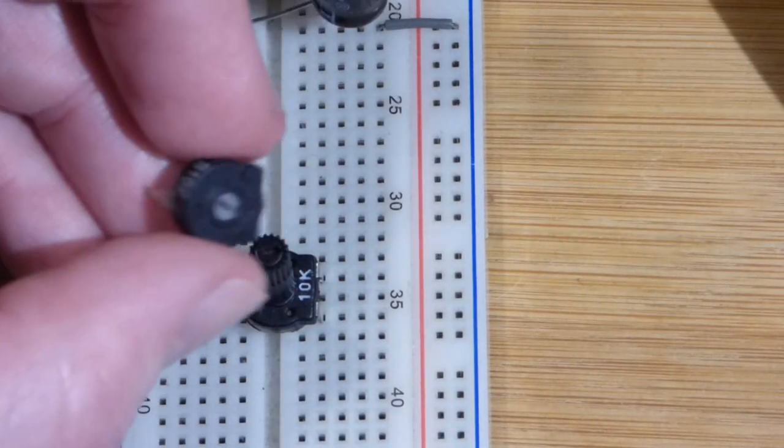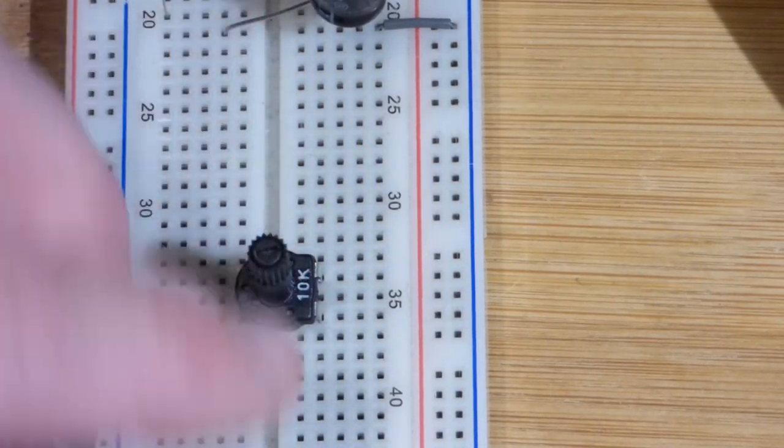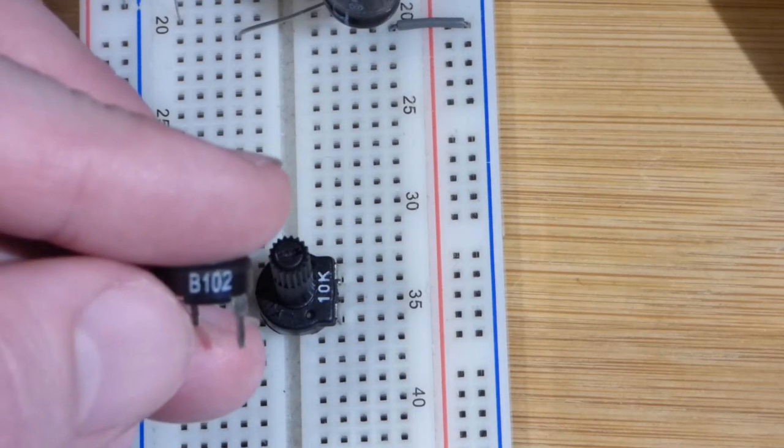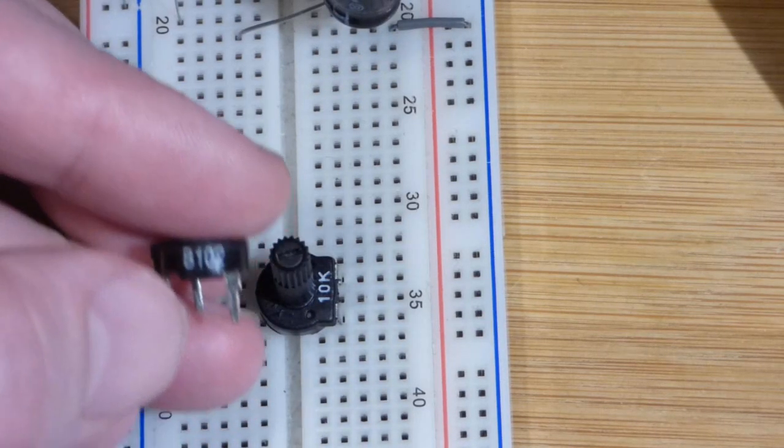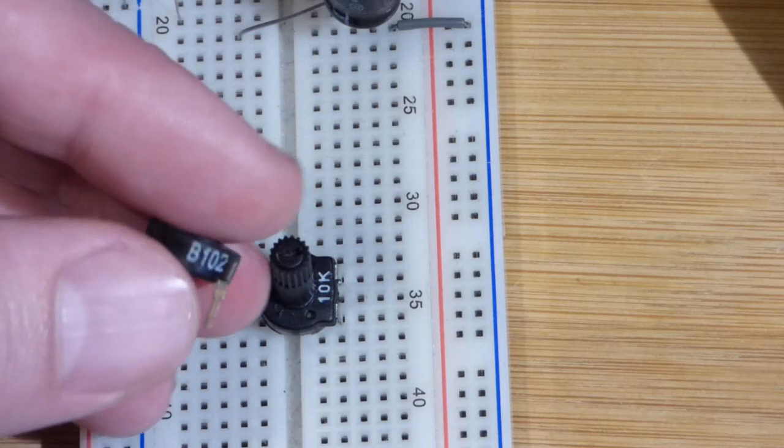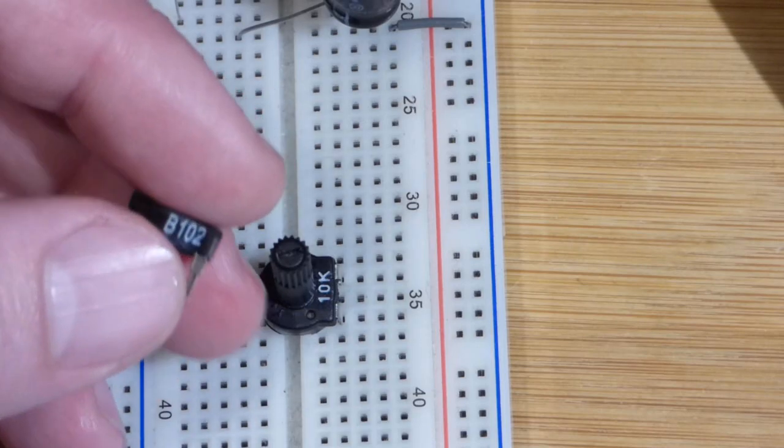Alright, so now in this video we're going to focus on the trim pot. I have a couple of them here. This is a 10 kilo ohm trim pot. And this one you see it says B. That means it's linear, which means as you turn the dial the resistance just changes steadily.